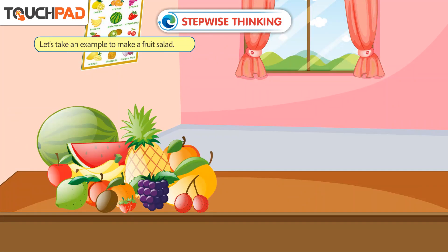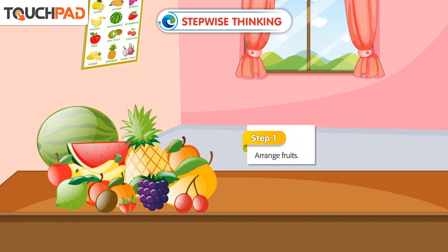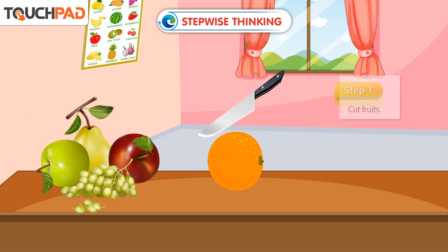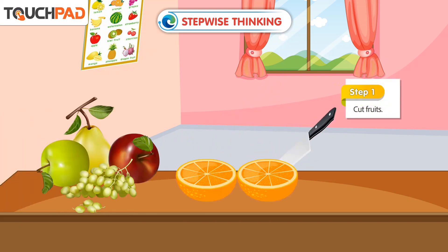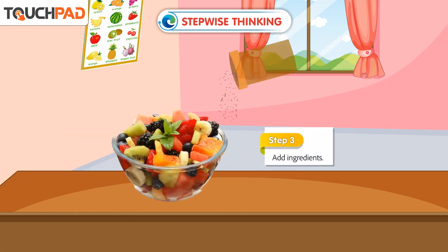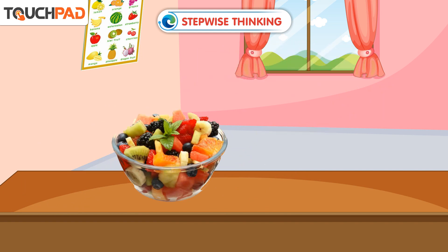Let's take an example to make a fruit salad. First, list the main steps. Step 1: Arrange fruits. Step 2: Cut fruits. Step 3: Add ingredients. Step 4: Serve the salad.